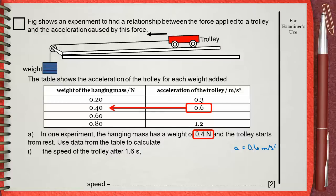He says that the trolley starts from rest. This makes the initial speed u equals zero.